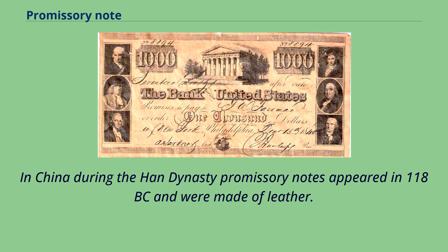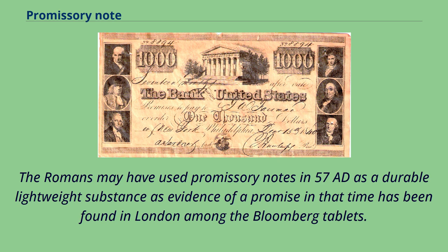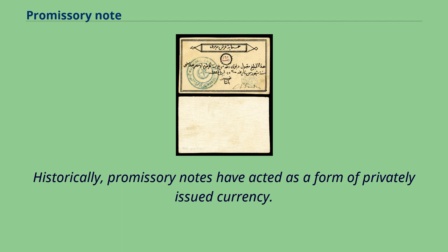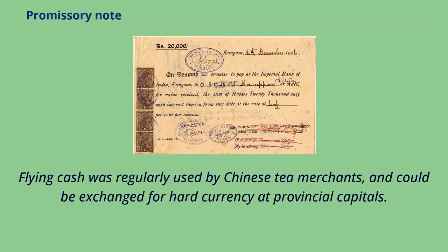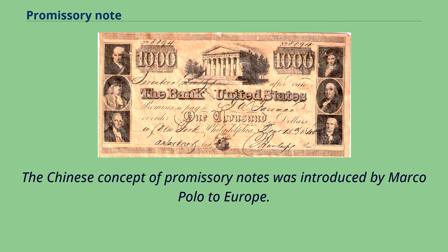In China during the Han dynasty, promissory notes appeared in 118 BC and were made of leather. The Romans may have used promissory notes in 57 AD — a durable lightweight substance as evidence of a promise from that time has been found in London among the Bloomberg tablets. Historically, promissory notes have acted as a form of privately issued currency. Flying cash, or fake-in, was a promissory note used during the Tang dynasty, regularly used by Chinese tea merchants and exchangeable for hard currency at provincial capitals. The Chinese concept of promissory notes was introduced by Marco Polo to Europe.